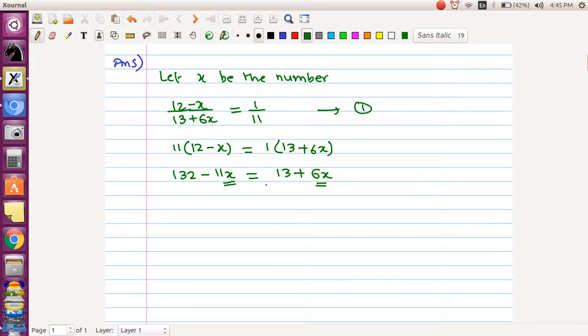Therefore minus 11x minus 6x is equal to 13 minus 132. Now this would add up to minus 17x is equal to, and 132 minus 13 would give us minus 119.